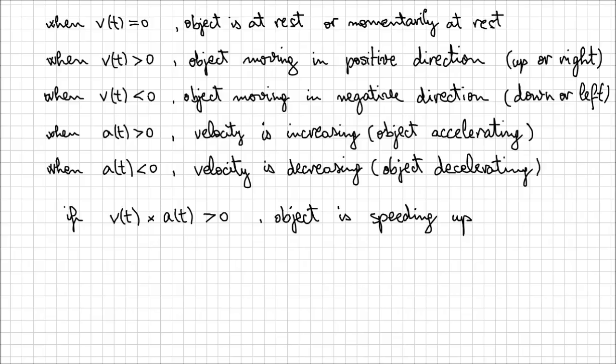If both velocity and acceleration are negative, that means the object is moving in a negative direction and the acceleration is decreasing or decelerating. So the acceleration actually, it's increasing in a negative direction, in other words. So it's also speeding up, only that in the negative direction.